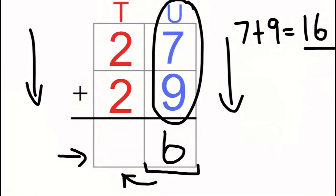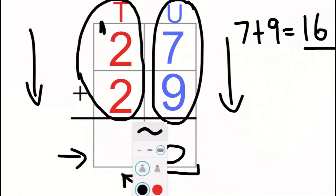We don't write it in here yet. We put it up here next to the two and add it with the other numbers. Then we carry on just like we were before and add everything that's in the tens column, remembering to add that one.